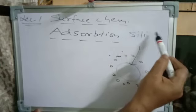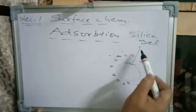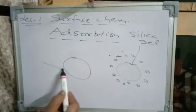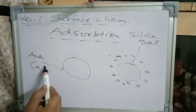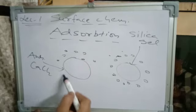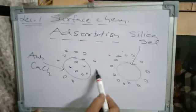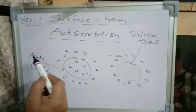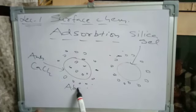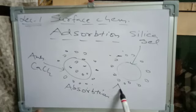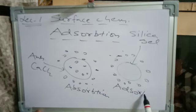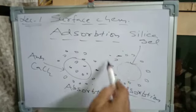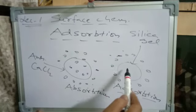If we use anhydrous CaCl₂, water vapors will be uniformly distributed — on the surface as well as inside — so that is absorption. Water vapors on silica gel remain only on the surface, so that is adsorption. Water vapors here are the adsorbate and silica gel is the adsorbent.